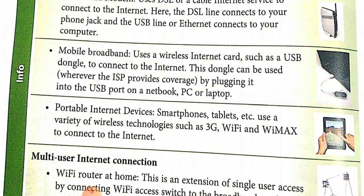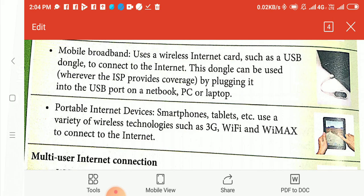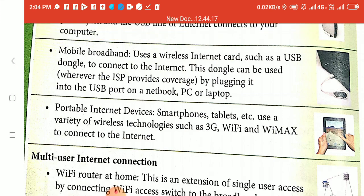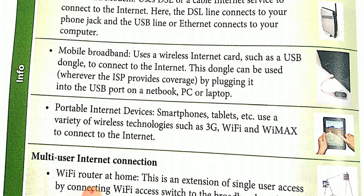Mobile broadband uses a wireless internet card such as a USB dongle to connect to the internet. This dongle can be used whenever the ISP provides coverage by plugging it into the USB port on a PC or laptop. Portable internet devices — smartphones, tablets, etc. — use a variety of wireless technologies: 2G network, 3G, Wi-Fi, and WiMAX to connect to the internet.